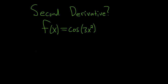In this problem, we have to find the second derivative of this function. So first, we'll find the first derivative, f prime of x. The derivative of cosine is negative sine, but here we have the cosine of 3x squared, so we'll have to use the chain rule.